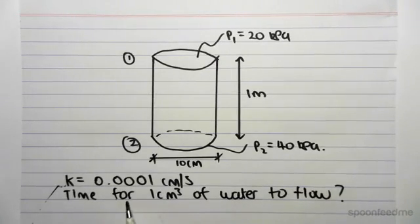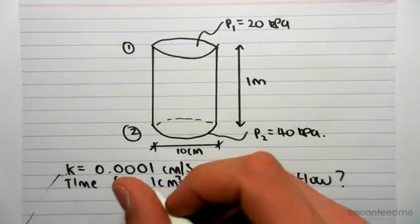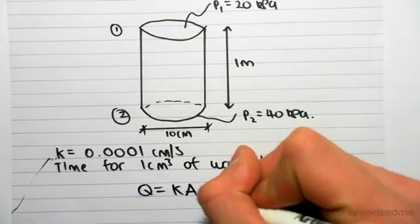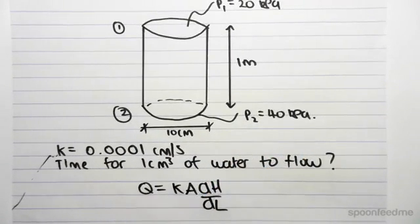And we've been asked to find the time for 1 centimeter cubed of water to flow through this system. So, once again, we know that Q equals kA dH on dL. So we're going to go find this flow rate Q.